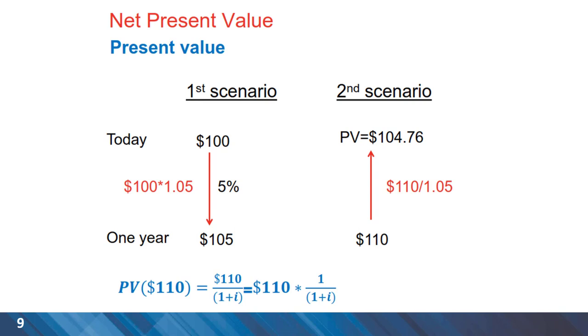In the same fashion, we can do the back projection and divide $110 in the first year by a discount rate of 1.05, and it gives us the present value of $104.76. We will be discussing the calculation of discount rate shortly.